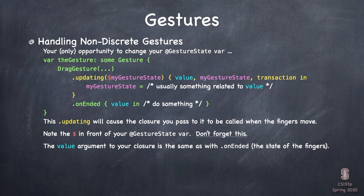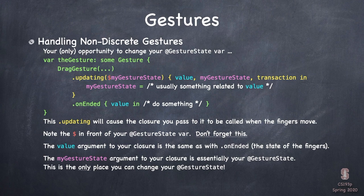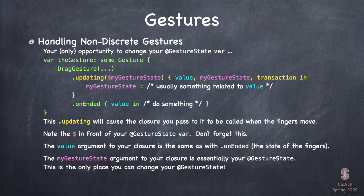The `.updating` closure is called repeatedly as the fingers are moving. It has three arguments: the first, `value`, is the state of the gesture — how close the fingers are, how far the finger has moved. For DragGesture it's a struct with StartLocation, EndLocation, timestamps. For MagnificationGesture it's just a CGFloat with the scale. The second argument, `myGestureState`, is essentially your gestureState inside the closure where you can assign it a value — it's essentially an in-out parameter. Your gestureState variable appears in three places: as the argument to `.updating`, as the second argument to the closure, and inside as a writable var you can change.